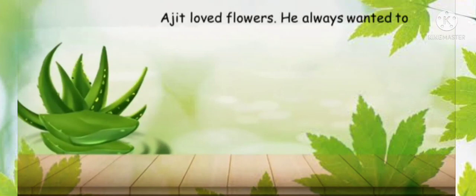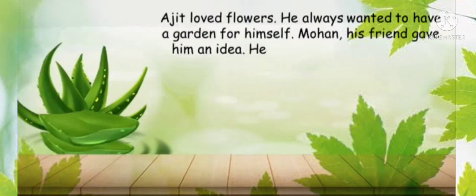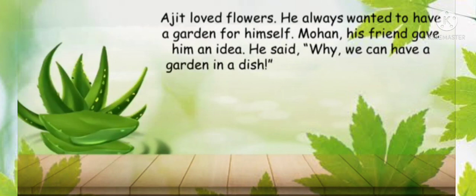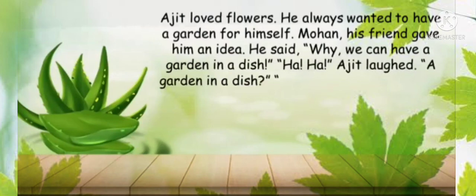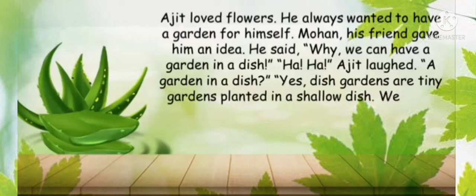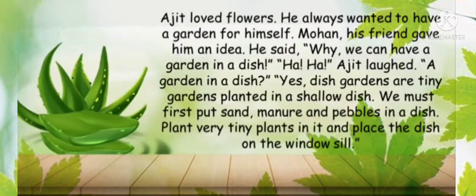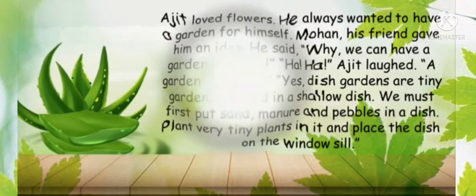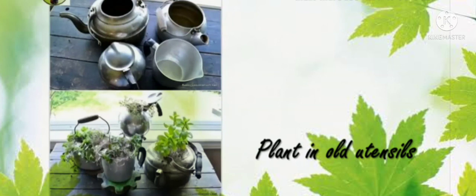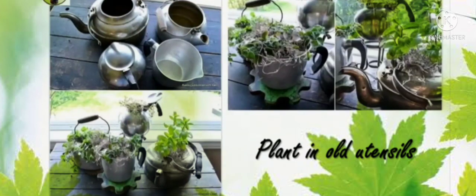Next is fun time. Ajit loved flowers and always wanted to have a garden for himself. His friend Mohan gave him an idea and said, 'Why not have a garden in a dish?' Ajit laughed — a garden in a dish? Yes! Dish gardens are tiny gardens planted in a shallow dish. We must first put some sand, manure and pebbles in a dish, then plant very tiny plants in it and place the dish on the window sill.